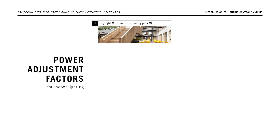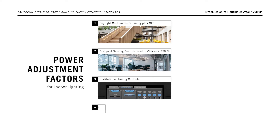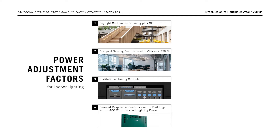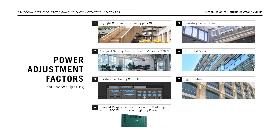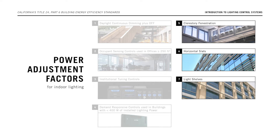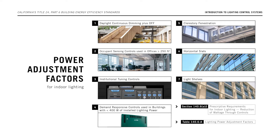They include daylight continuous dimming plus off control, occupant sensing controls used in offices larger than 250 square feet, institutional tuning controls, demand-responsive controls used in buildings with less than 4,000 watts of installed lighting power, clerestory fenestration, horizontal slats, and light shelves. For the clerestory fenestration, horizontal slats, and light shelf power adjustment factors, the daylighting design must meet the requirements in Section 140.3d. More information on these control strategies can be found in Section 140.6a2 and Table 140.6-A of the energy code.